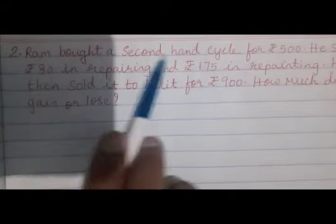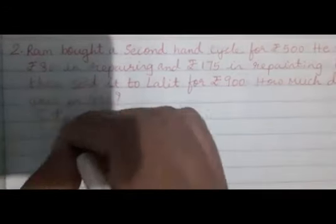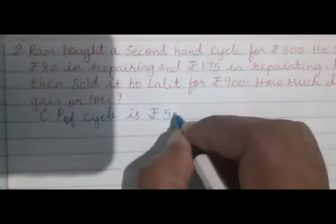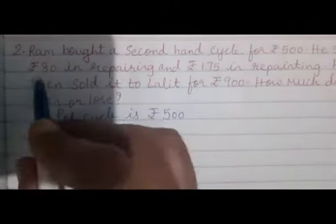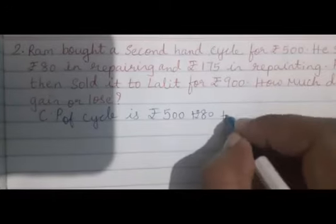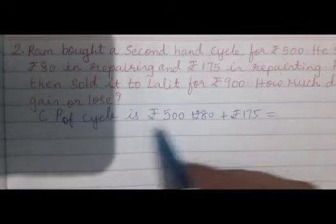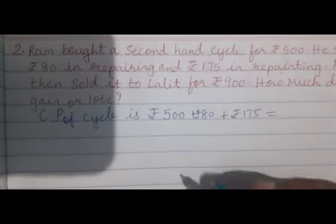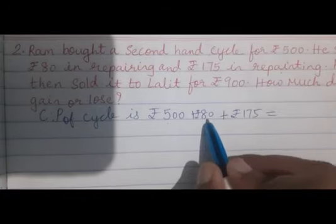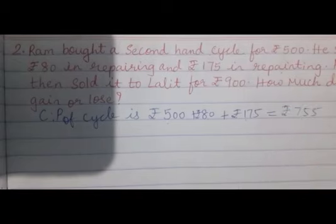Let us understand the question. Ram has brought a second hand cycle for 500 rupees. So cost price of cycle is rupees 500. In that he spent rupees 80 for repairing. That will be added as repairing charges. Plus he spent 175 rupees for repainting it. This all is getting added in the cost price. So it becomes 500 plus 80 is 580 plus 175. It becomes 755 rupees.